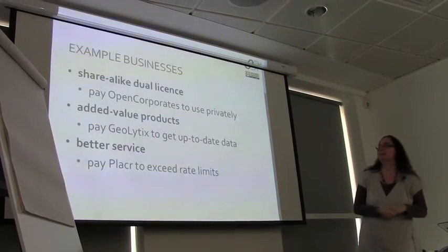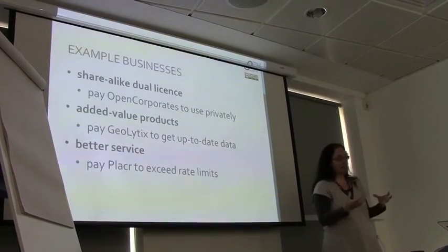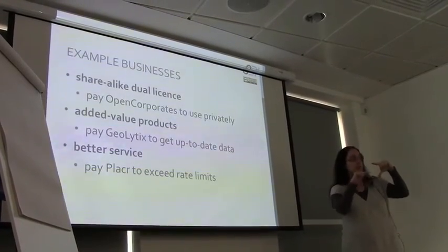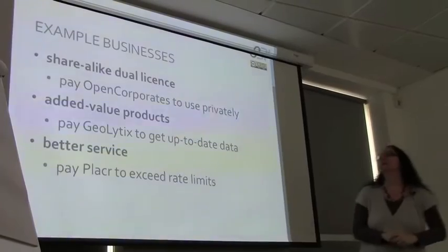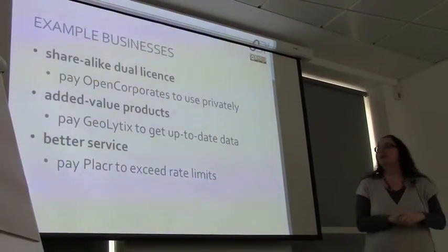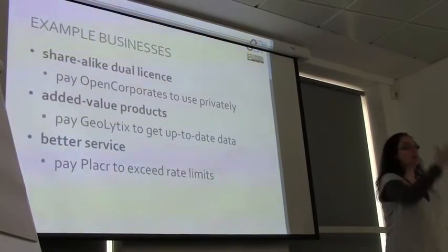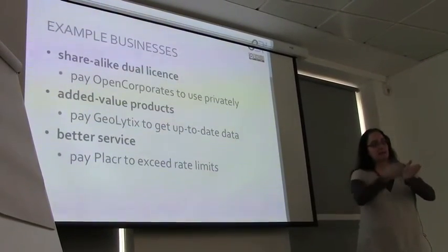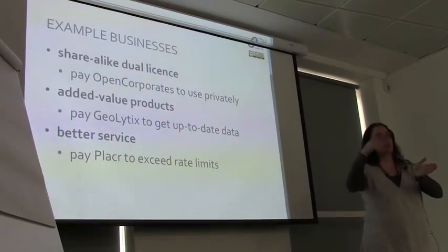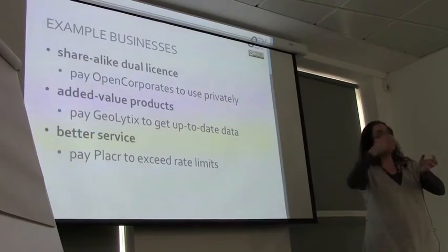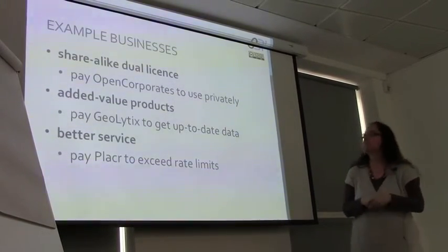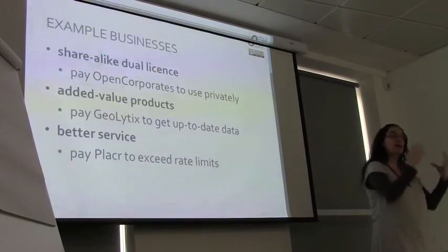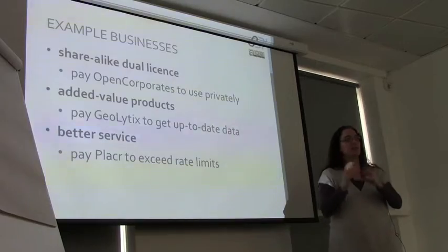Another example is Geolytics. They have provided postcode-level area boundaries to a really nice degree of detail, but only made it available at a particular point in time — a couple of months ago. As things change, that data will get out of date, so they are offering a paid product that will keep up to date. They're releasing current data to people who are willing to pay. So again, you've got the open data — which in this case has lower quality — versus the high-value data that people pay for.